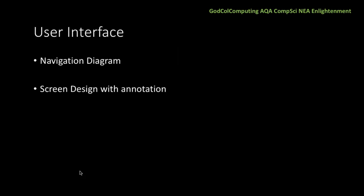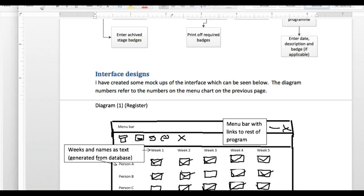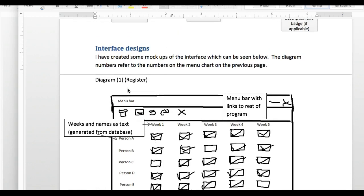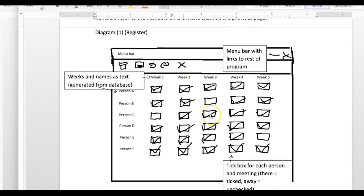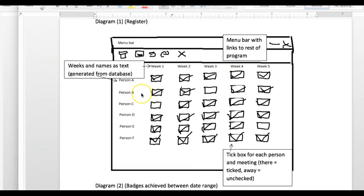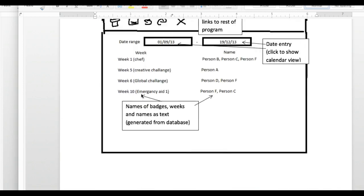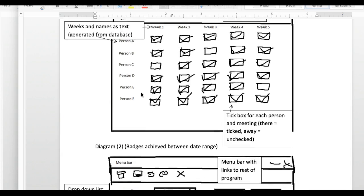So let's move on to the different sections. User interface — I definitely want to see a navigation diagram. Even if that's for a command line interface, I want to see how you can move about within the system. Then crucially, screen designs with annotation. Here's an example from an ex-student — some pretty rudimentary screen designs, but there's a little bit of annotation there, and it goes on to include the whole system. You can kind of see how it works. We're not after beautiful, but we are after effective.